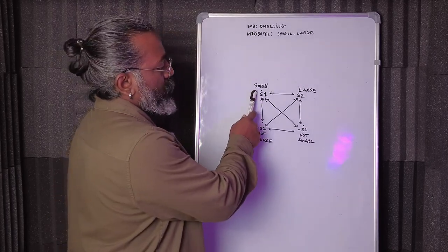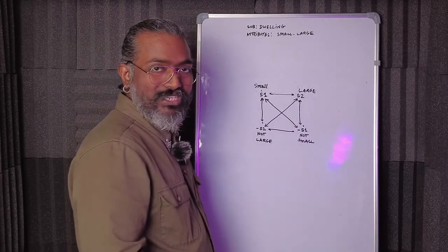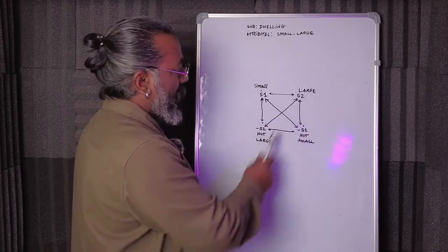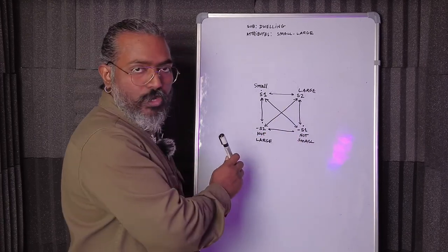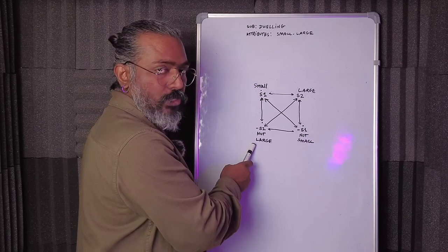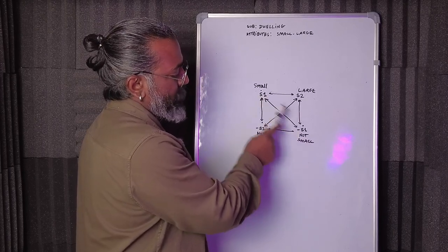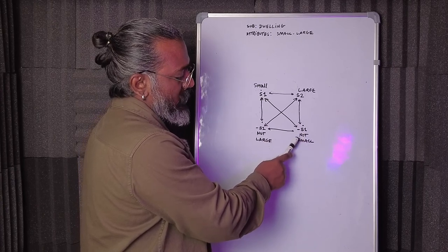So small, the S1, is small. The opposite is large, which is S2. And minus S2, according to the semiotic square, we need to write not large. So your contradictory diagonal, S1 minus S1, is not small.